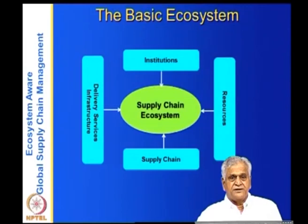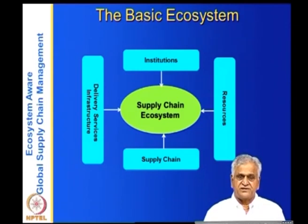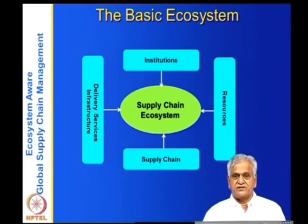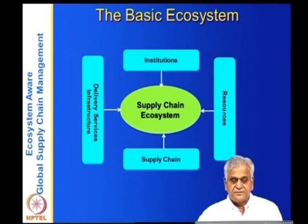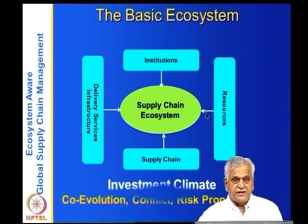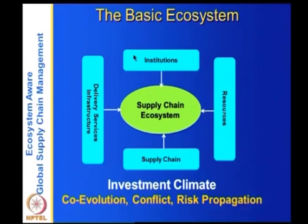Looking at the basic ecosystem diagram: the supply chain consists of a multi-tier chain starting with raw materials and ending with delivery to the customer. Then we have resources, institutions, and delivery mechanisms. What is important to study is that these three factors — the resources, the institutions, and the delivery mechanisms — are also known as the investment climate.